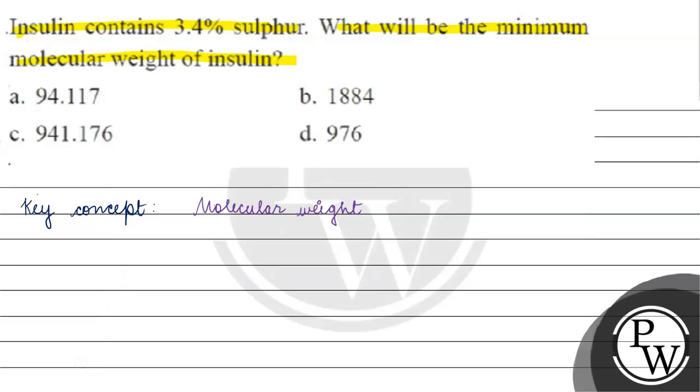See, we have said that 100 gram of compound, we have 100 gram of insulin. We have 3.4 gram of sulfur. Right?